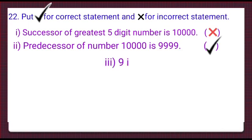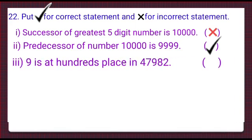The third part is 9 is at 100's place in 47,982. Observe carefully. 47,982 is the number. It is 900. 9 is at 100's place here. So, the statement is correct one and we will put a tick mark here.